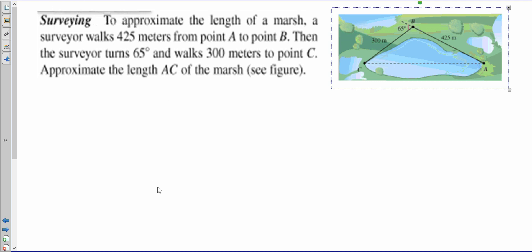Alright, we're going to go through some more problems. We have one here to approximate the length of a marsh. A surveyor walks 425 feet from point A to point B, then the surveyor turns 65 degrees and walks 300 meters to point C. Approximate the length AC for the marsh.